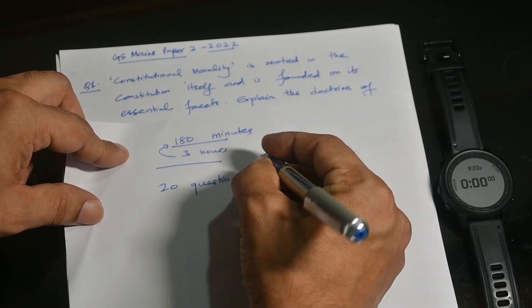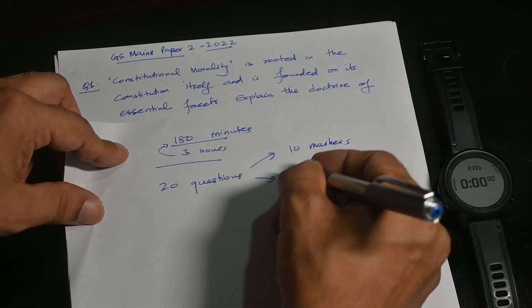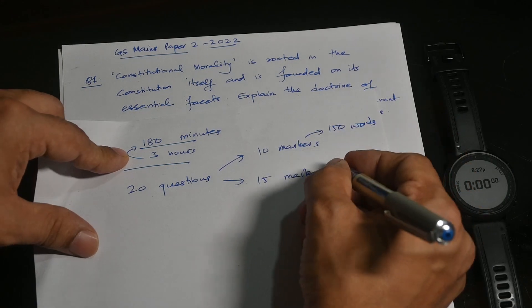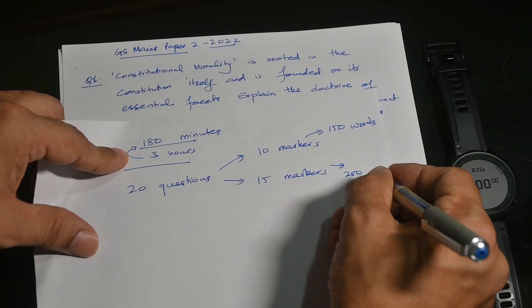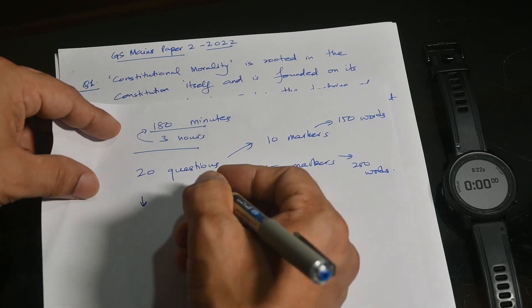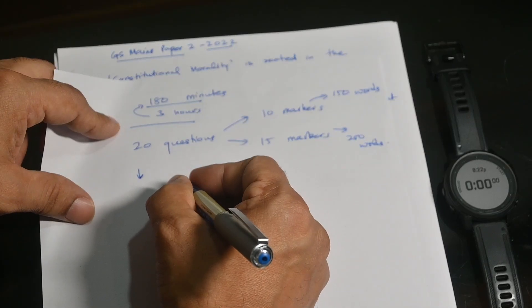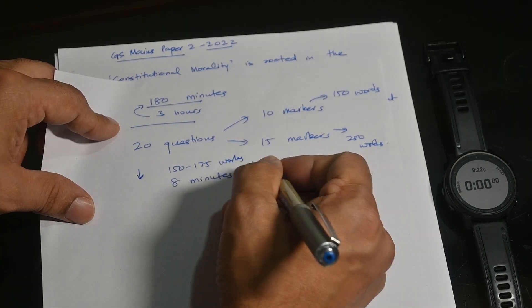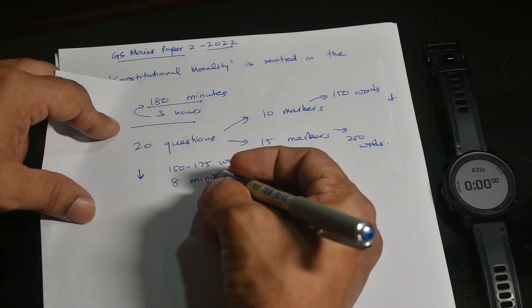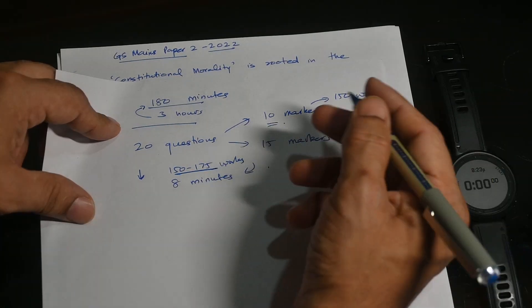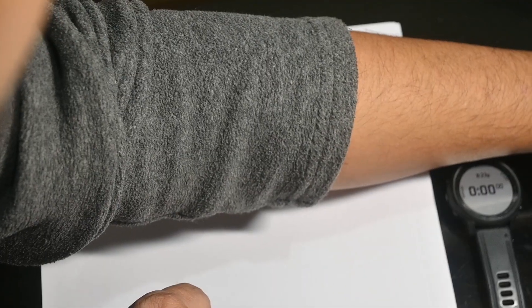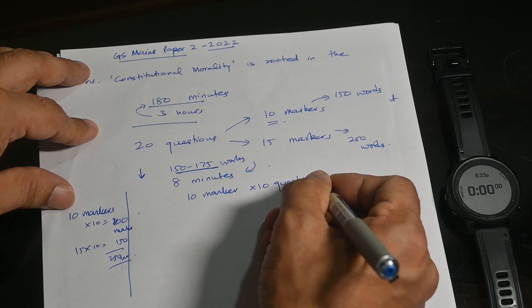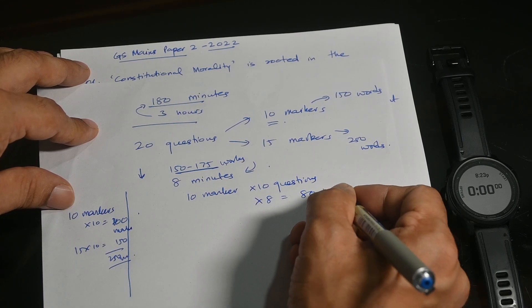Total 20 questions are asked, and there are two types of questions: normally 10 markers and 15 markers. These 10 markers are supposed to be around 150 words and these 15 markers are supposed to be around 250 words. So let's say you are able to write one question in eight minutes. You are able to write around 150 to 175 words in eight minutes. Then in how many minutes will you be able to finish these 10 markers?